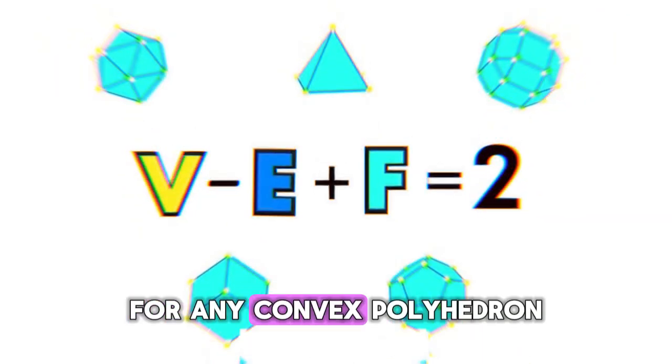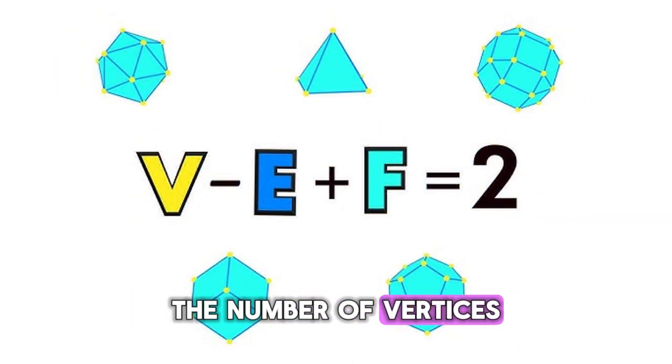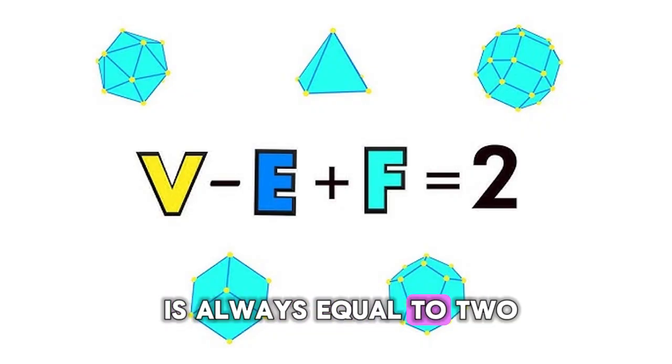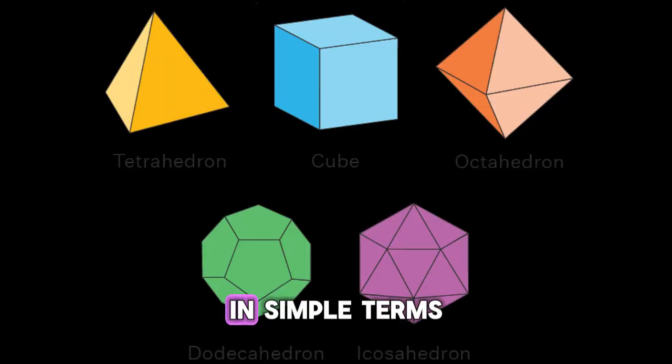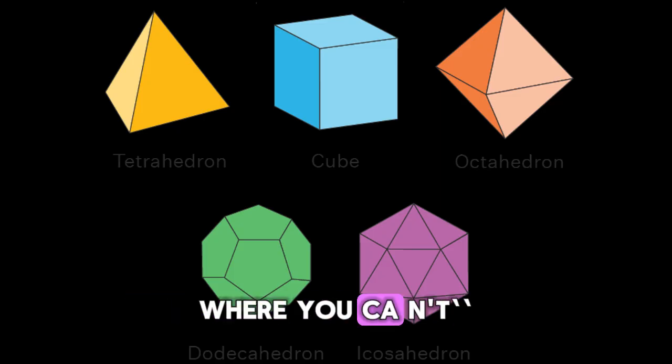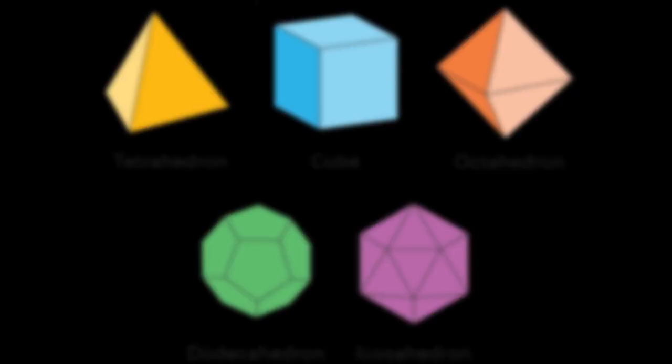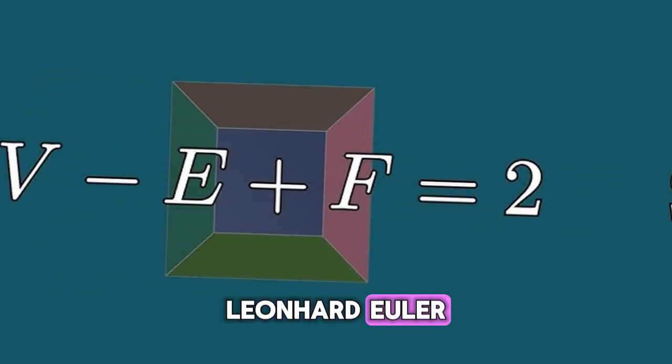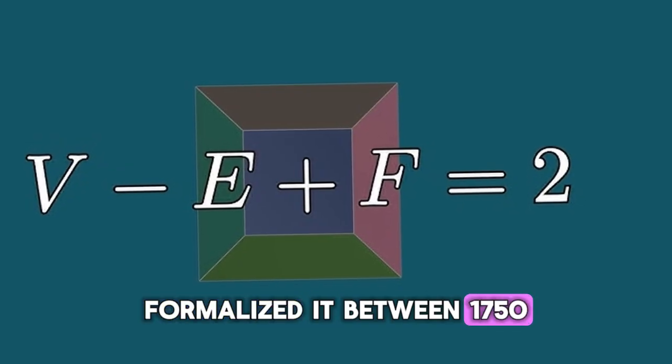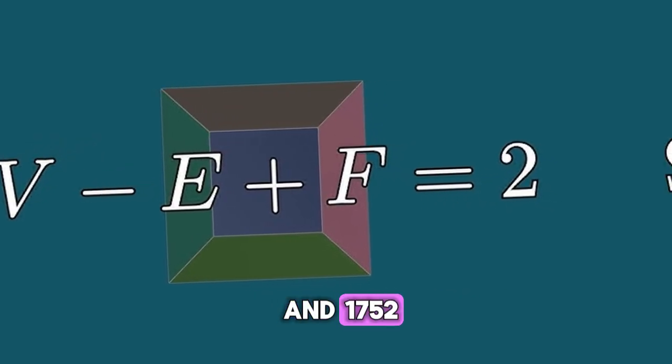Number six on my list is the Euler characteristic. For any convex polyhedron, the number of vertices minus the number of edges plus the number of faces is always equal to two. In simple terms, a convex polyhedron is one where you can't poke inward at any point on its surface. Leonhard Euler, for whom the concept is named, formalized it between 1750 and 1752.